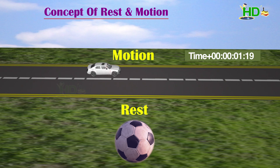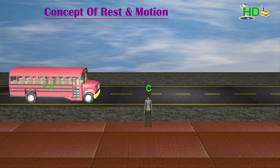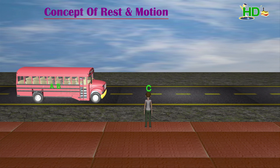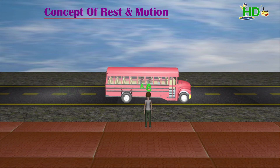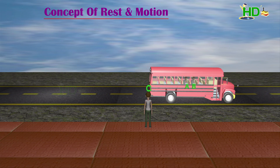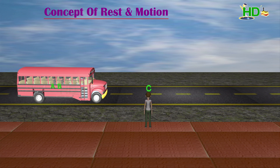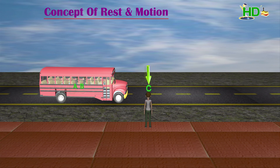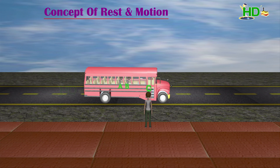Is this idea enough to define rest or motion? No, this is not enough. Now we take these examples. Consider two persons, A and B, who are in a moving bus. C is on the ground. If you ask B's state to A, then A says B is at rest. If the same question you ask to C — what about B — then C says B is in motion.